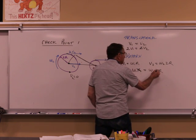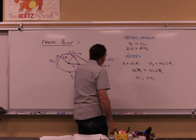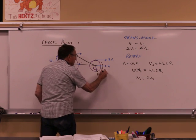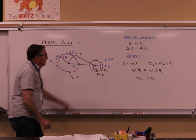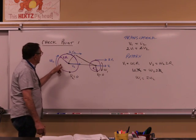R's cancel out. Omega 1 is twice omega 2. This speed here, rotary, that's omega 1. Omega 1 is moving twice the rotary speed of omega 2.